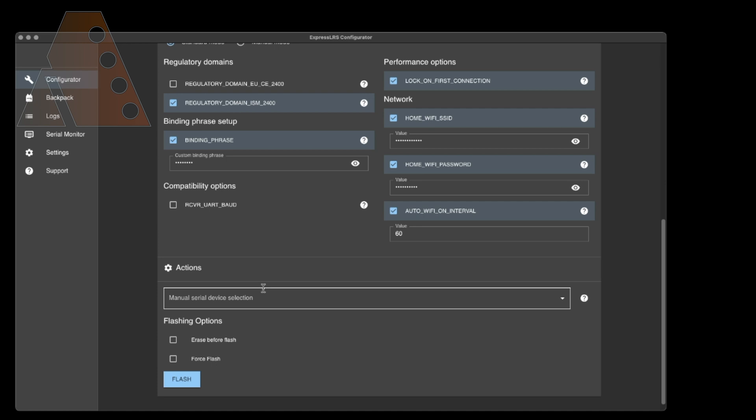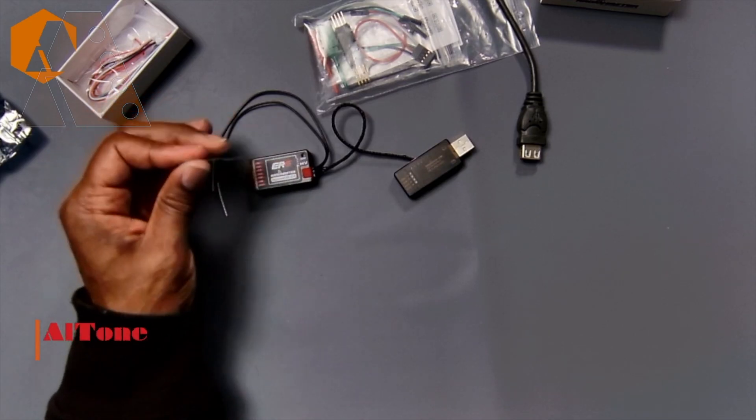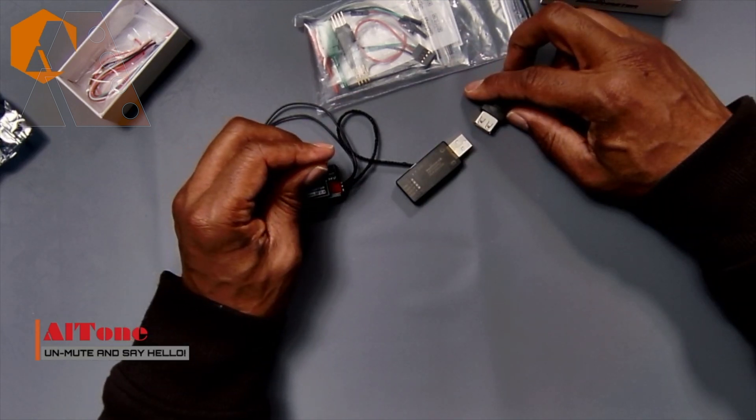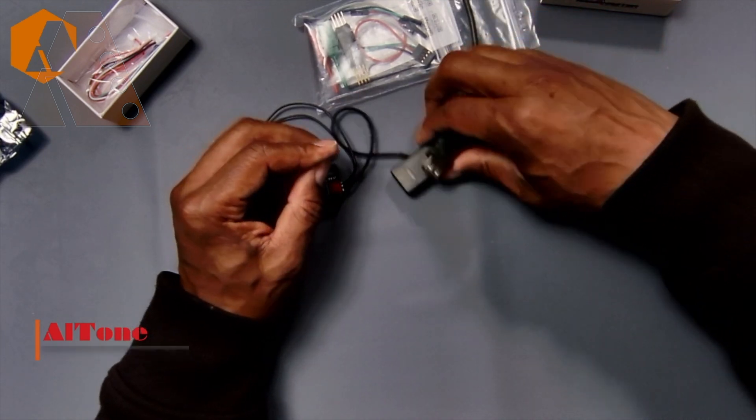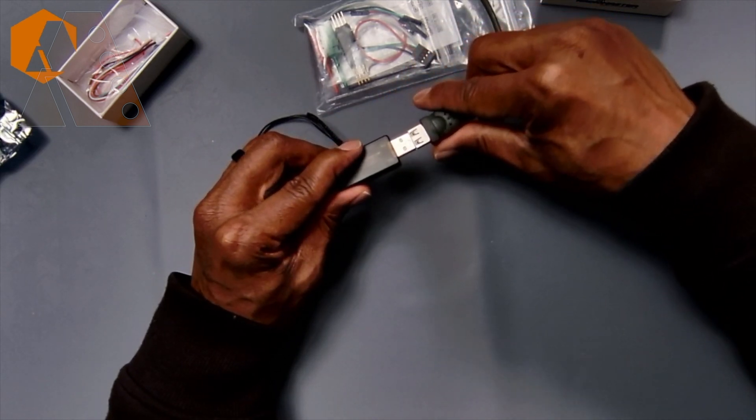So last but not least, we're going to go down and select serial device. We haven't connected it yet, so let's go ahead and connect it. We're going to plug this guy in while holding down the boot button. We have the boot button plugged in and held down. I'm going to hold it with this hand and plug it in.